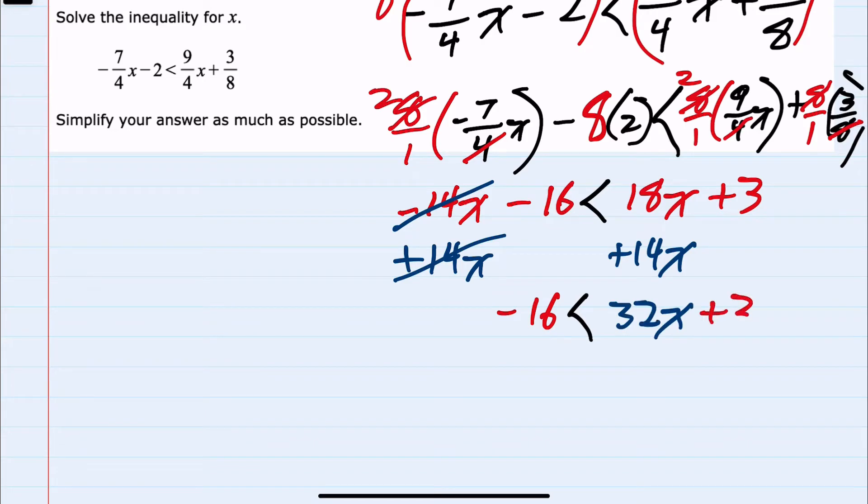To continue isolating for x, I can move that plus 3 away from the x side by subtracting 3 from both sides. Adding and subtracting on both sides doesn't affect the direction of the inequality.